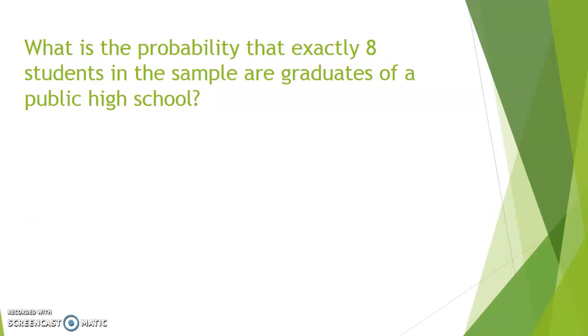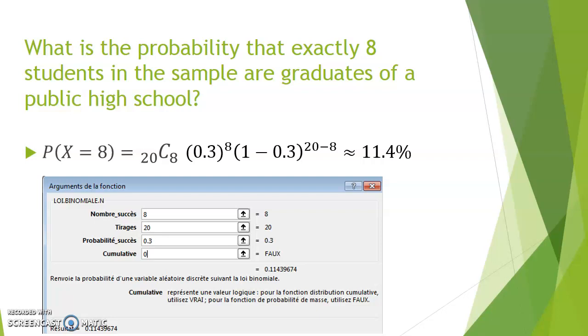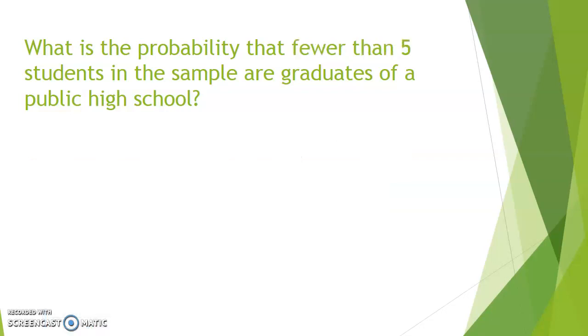How likely is it that exactly eight students in our sample of 20 will come from public high schools? Well, we have access to the formula if we wanted to calculate it with a calculator for instance. We could also refer to probability tables or just input the information into Excel. So eight successes from our 20 trials, probability of success 0.3, and cumulative will put zero because we're not adding the possibilities from zero to eight but counting specifically the probability of having eight exact successes.